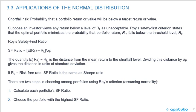There are two steps in choosing amongst portfolios using Roy's criterion, assuming normality. Number one, we calculate each portfolio's safety first ratio, and then we choose the portfolio with the highest safety first ratio — similar to how we choose the portfolio with the highest Sharpe ratio, because we're looking at return in the numerator and risk in the denominator.